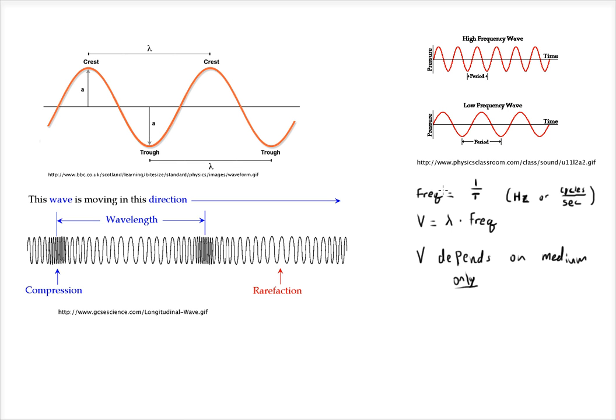So now if you just check out the units, if we have how many cycles go by per second as frequency, and then we have wavelength, which is how long is in distance a cycle, by multiplying wavelength and frequency, we'll get velocity, we'll get meters per second.